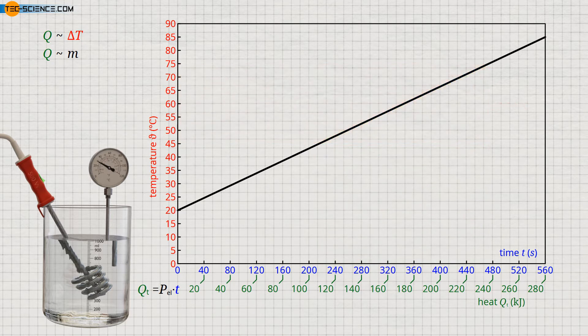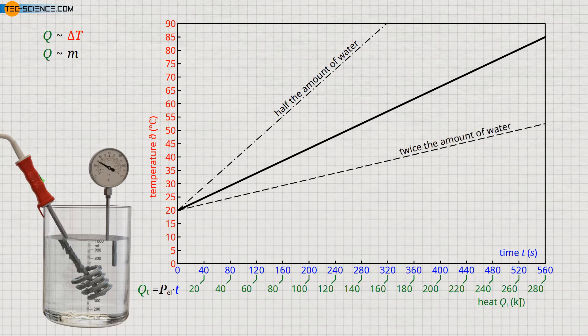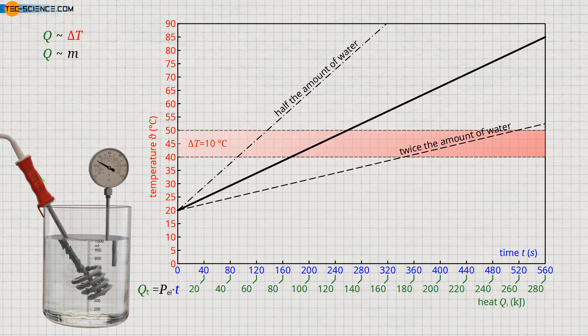Let's now look at the result of the experiment when it is carried out with only half the amount of water. We see that the temperature rises twice as much within a certain time. If, on the other hand, twice the amount of water is heated, the temperature rises only half as much. We now see that if the same temperature change is to be achieved in both cases, twice the amount of heat must be supplied for twice the amount of water, and only half the amount of heat energy is required for half the amount of water.